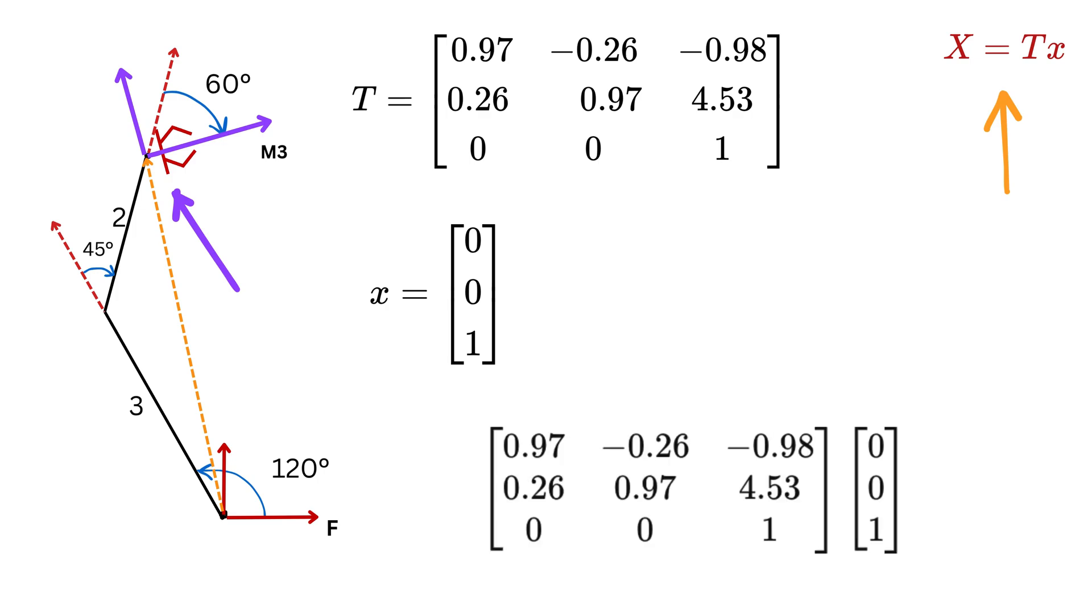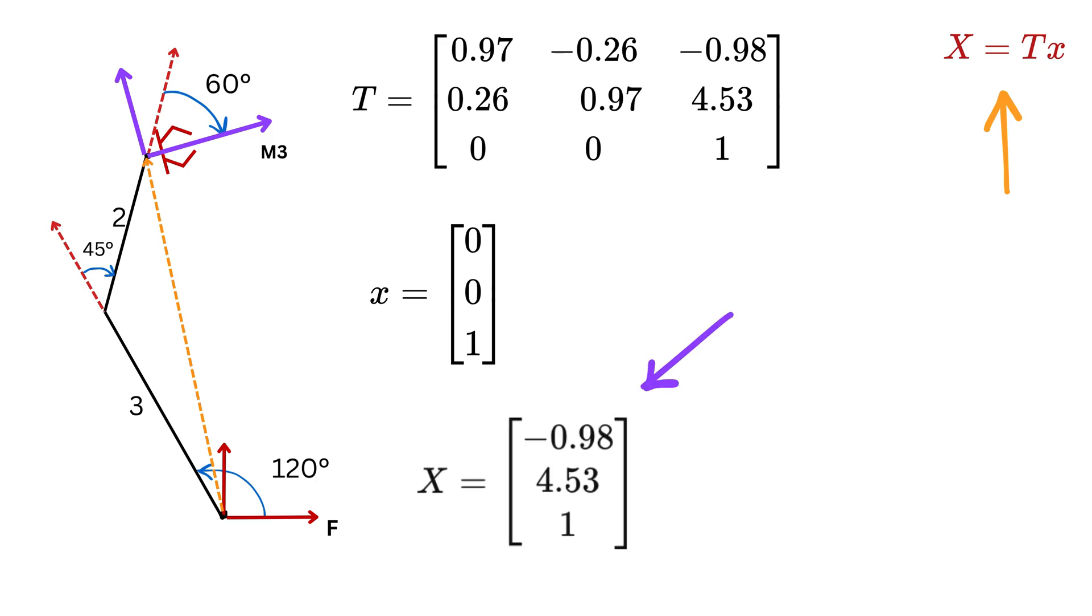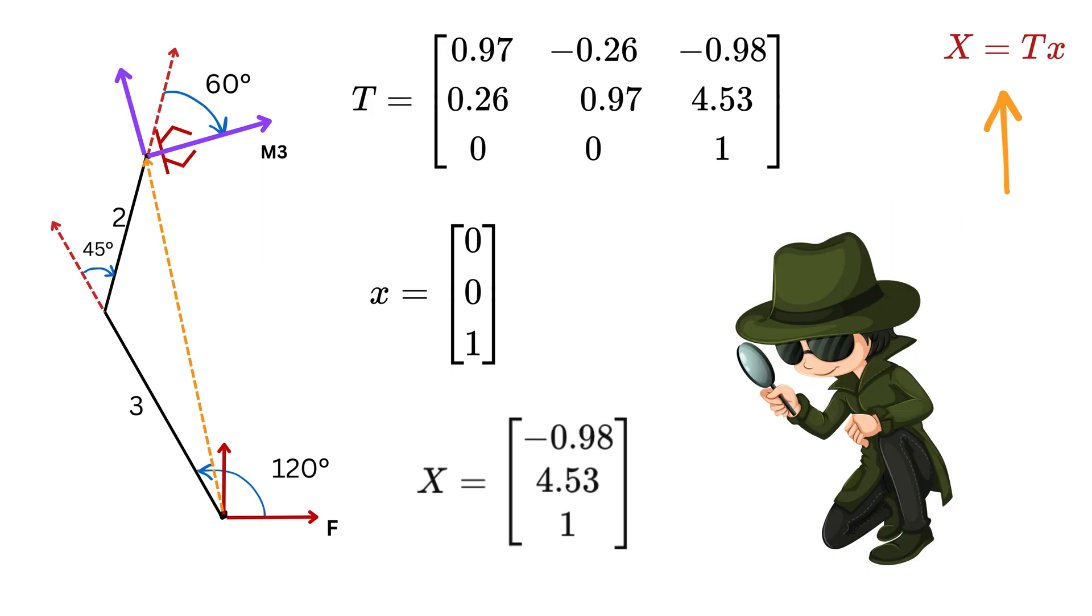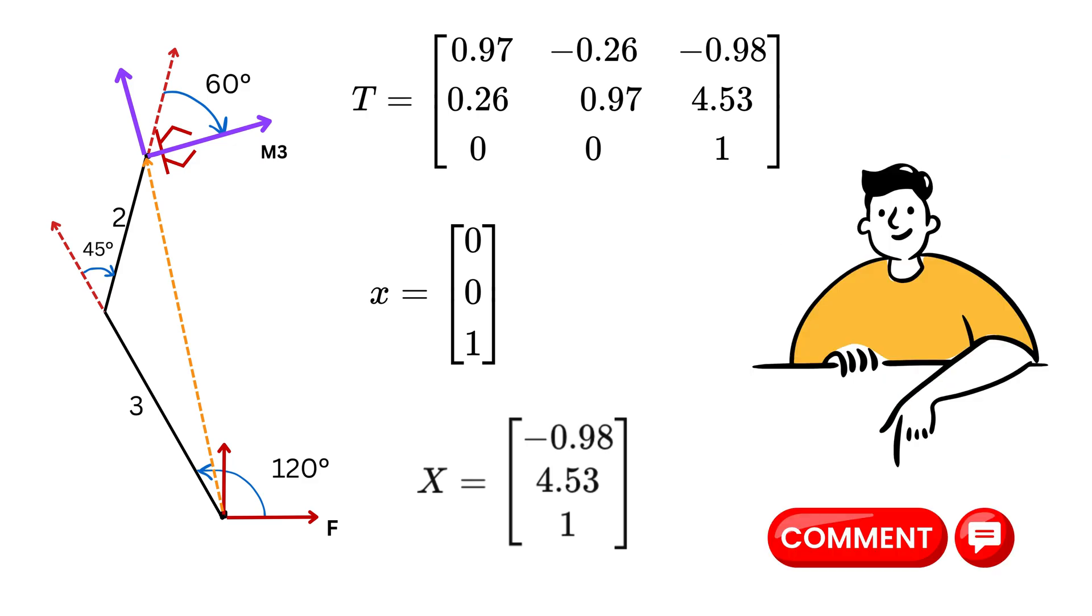So when we multiply T with this vector, it gives us big X that equals this, which will be the position of the end-effector's origin in the fixed frame, and that's it. Can you verify the same for me using simple geometry and see if the distance matches what we got from forward kinematics, and let me know in the comments.